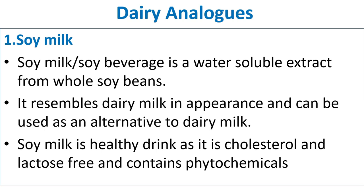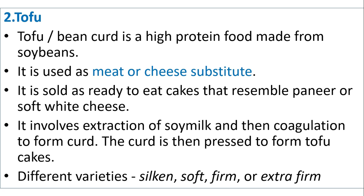Dairy analogues: Soy milk is a water-soluble extract from whole soybeans. It resembles dairy milk in appearance and can be used as an alternative. Soy milk is a healthy drink as it is cholesterol-free, lactose-free and contains phytochemicals. Tofu (bean curd) is a high-protein food made from soybeans, used as a meat or cheese substitute, stored as ready-to-eat cakes resembling paneer or soft white cheese. It involves extraction of soy milk and then coagulation to form curd, which is pressed to form tofu cakes.